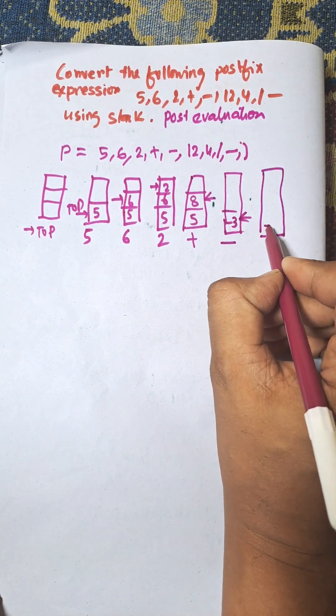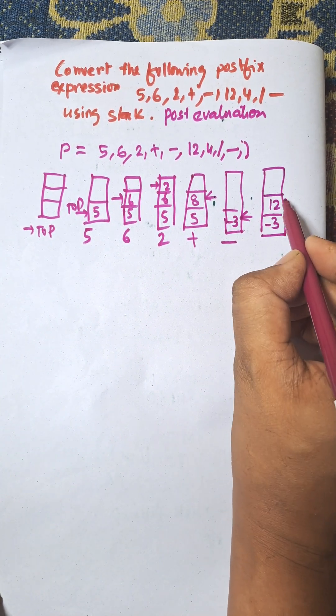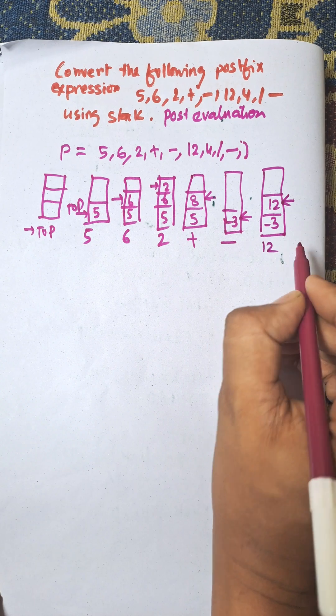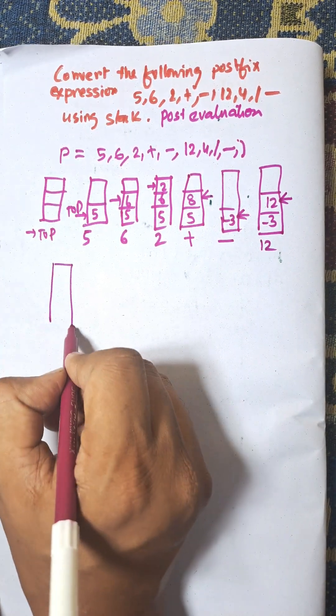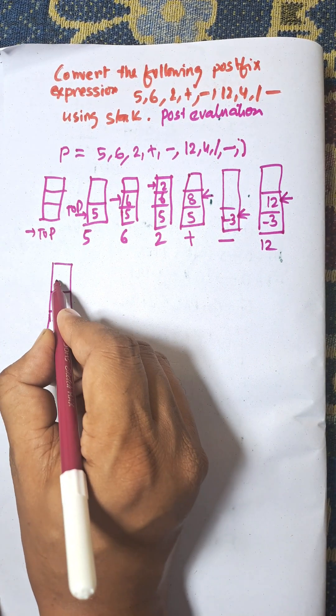Next, 12, minus 3, and 12, then 4, minus 3, 12, and 4.